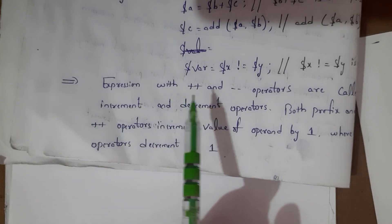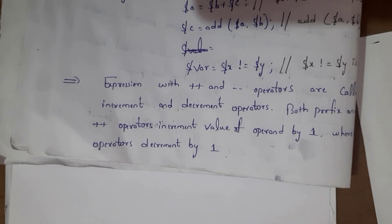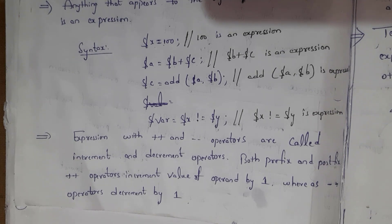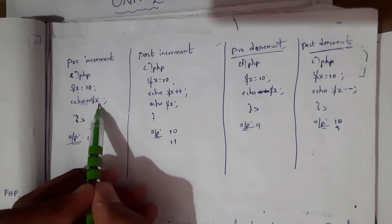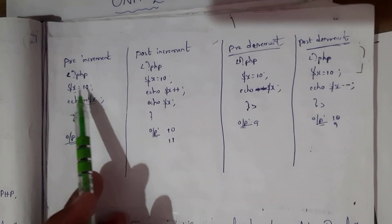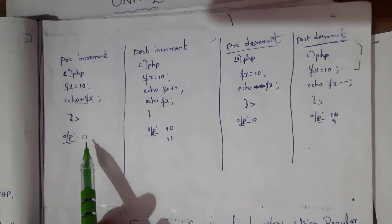Expressions with '++' and '--' operators are called increment and decrement operators. Both prefix and postfix operators increment value by one, whereas '--' decrements value by one. For pre-increment: '$x = 10', then 'echo ++$x' — we increment first and then generate output, so 10+1=11, and the output is 11.